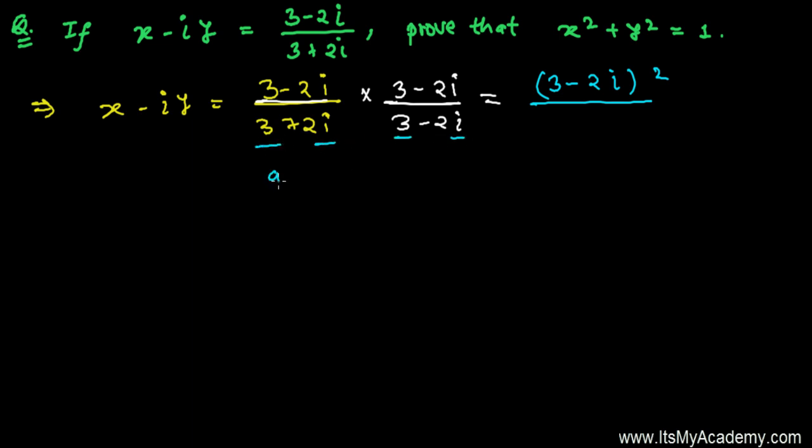You know, we have already learned the formula for a+b, a-b. That's a² - b². So that formula we're going to use here, it's going to be 3² - (2i)².